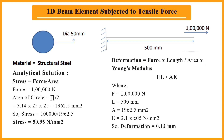Let's discuss the theory behind the analysis. We are going to perform tensile loading on this 1D beam element. The material we are using is structural steel. From the analytical solution, we found the stress as 50.95 Newton per mm square, and the deformation is 0.12 mm — both of which we will verify from the software after solution.